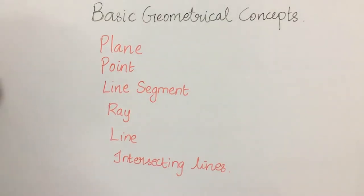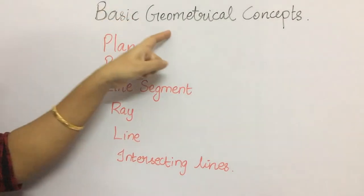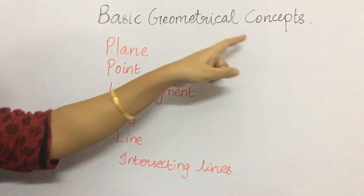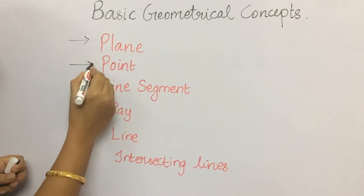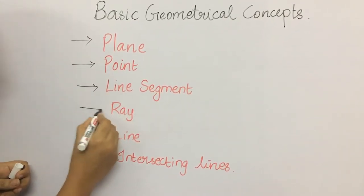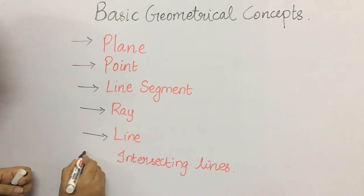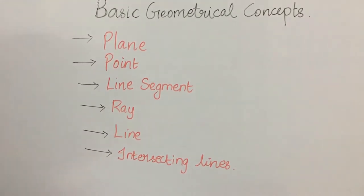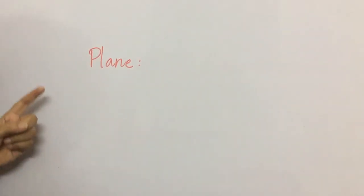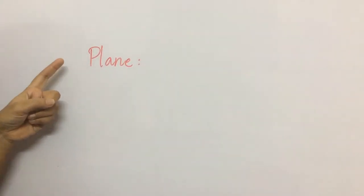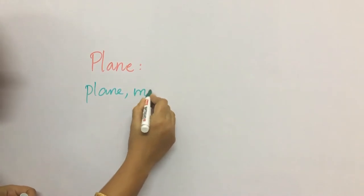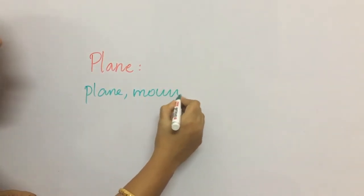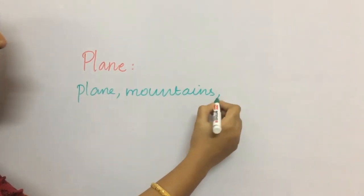First, let us start with the topic basic geometrical concepts, in which we are going to learn plane, point, line segment, ray, line and intersecting lines. In class 3, you would have learnt different types of landforms where you learnt plane, mountains, valleys, etc.